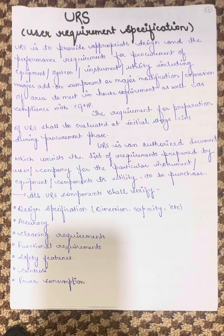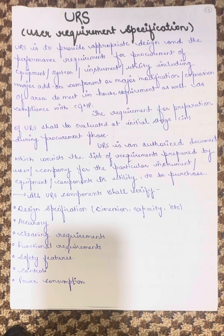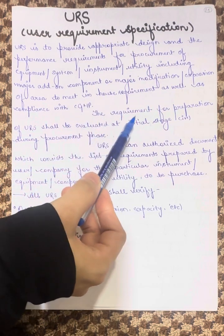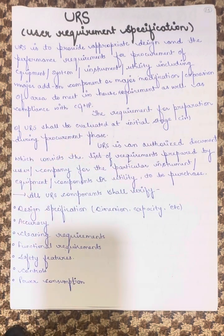URS stands for the User Requirement Specification. URS is to provide appropriate design and the performance requirement for the procurement of equipment, system, instrument or the utility including major add-on components or major modification or expansion of area to meet in-house requirements as well as compliance with the CGMP, current good manufacturing practices. The requirement for preparation of URS shall be evaluated at initial stage, that is during the procurement phase. URS is an authorized document which consists the list of requirements prepared by the user or a company for the particular instrument or equipment or the components or the utility to be purchased.